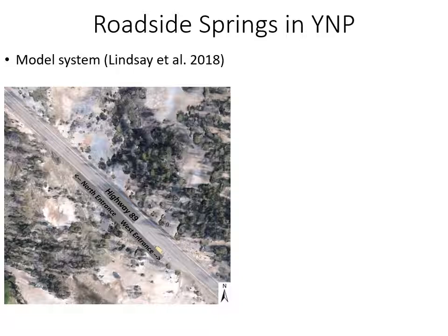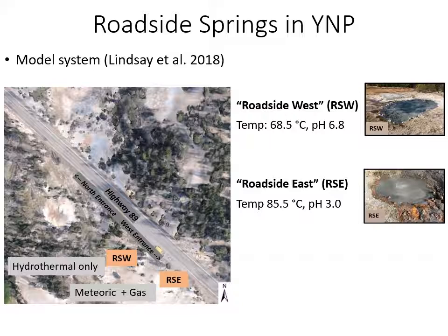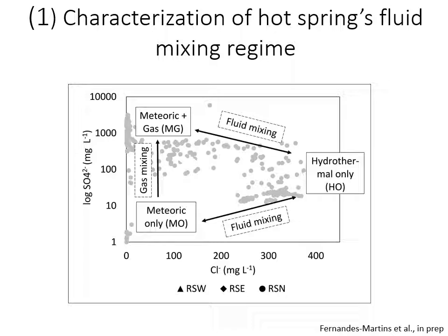We chose hot springs called the Roadside springs, a model system already characterized by Lince et al. They represent the bimodal distribution: Roadside West is a hydrothermal-only spring with pH greater than 6 and temperature around 70°C, and Roadside East is an acidic hot spring with increased temperature. However, we have a third hot spring that hasn't been fully characterized — Roadside North — which has a very hot temperature but a pH of 5.1, falling outside the bimodal distribution. We placed an interrogation point there because we don't fully know which type of mixing regime is influencing it.